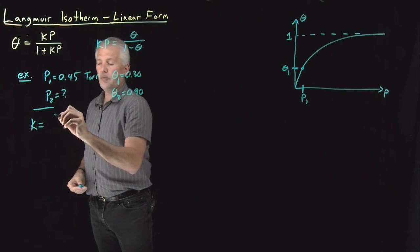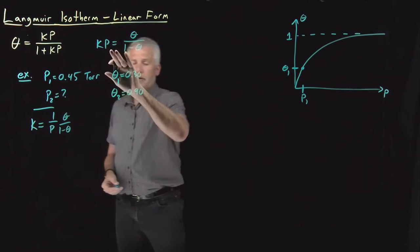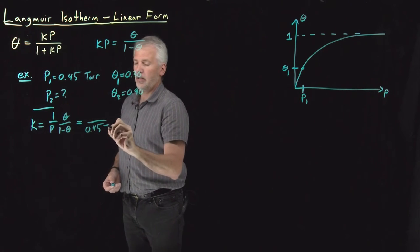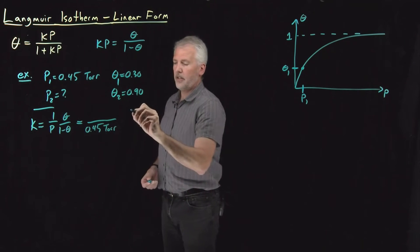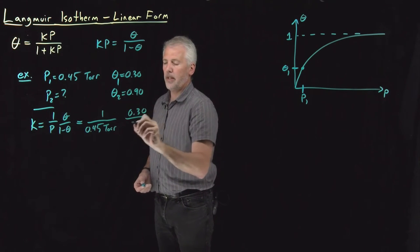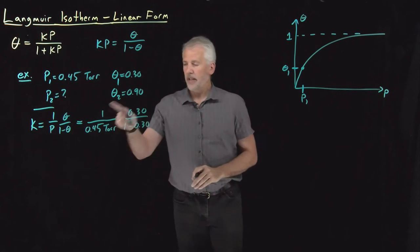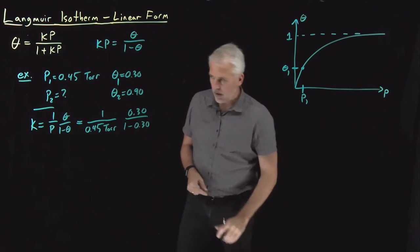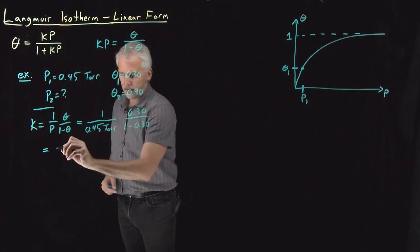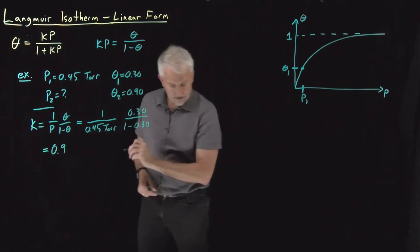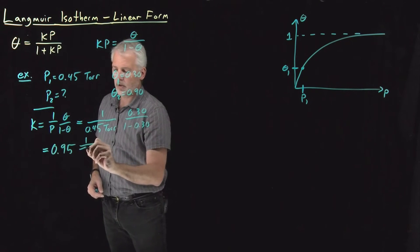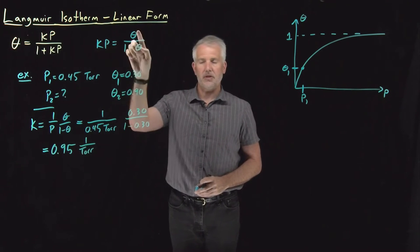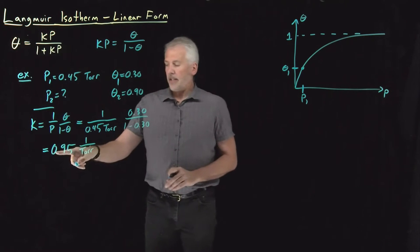So the way to proceed is, since we know p1 and theta1, we can use this expression to calculate k. So if I write k as 1 over p times theta over 1 minus theta, rearranging that equation just slightly, I can calculate that to be, if theta is 0.3, then 1 minus theta is 0.7. If I calculate that particular ratio, 1 over 0.45 times 0.3 divided by 0.7, what I'll get is a value for k of 0.95, 1 over torr.